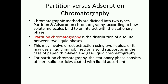Chromatographic methods are divided into two types: partition and adsorption chromatography, based on how solute molecules bind or interact with the stationary phase. Partition chromatography involves the distribution of a solute between two liquid phases. This may involve direct extraction using two liquids, or it may use a liquid immobilized on a solid support, as in paper chromatography, thin layer chromatography, and gas-liquid chromatography.